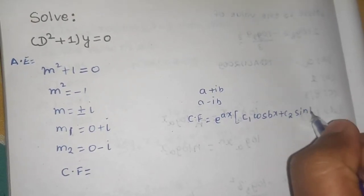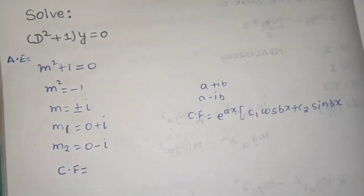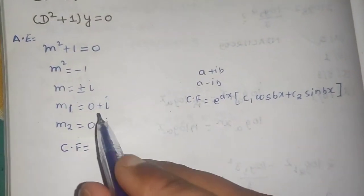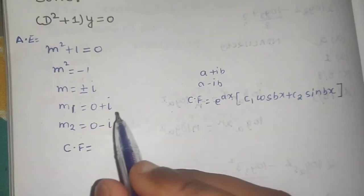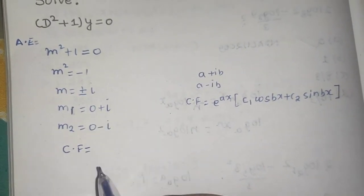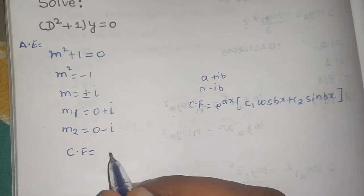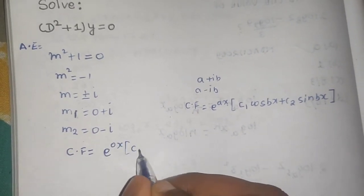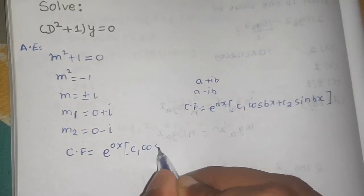So I will follow the same process here also. Here my a plus iota b, c1 cos of b. So a is 0 and b is 1, so e power 0 x, c1 cos of 1 x that is x only, c2 sin of 1 x that is x only.